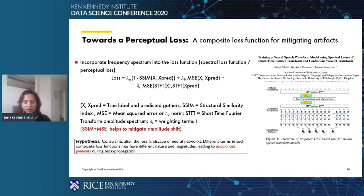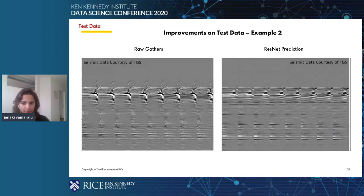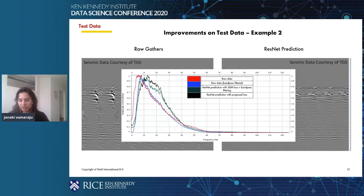In our case, residual connections improved the results and helped with vanishing gradient pathologies. On the validation data set, the proposed mixed loss — the green line — performed much better in terms of peak signal-to-noise ratio metric compared to the MSE or SSIM baseline. Similarly, the structural similarity index with the proposed mixed loss shows a slight improvement. Going back to our test data and predicting with the new improved model: on the left are the raw gathers, and on the right the ResNet prediction. The frequency spectrum analysis shows that the frequency spectrum is well-preserved.